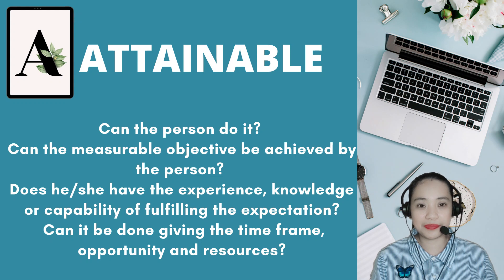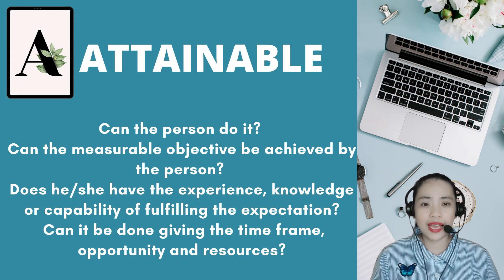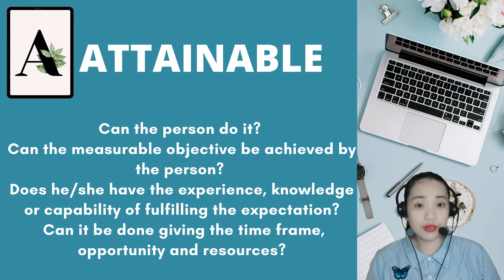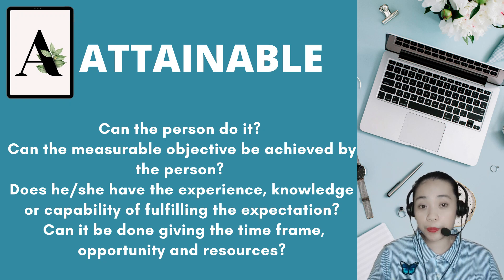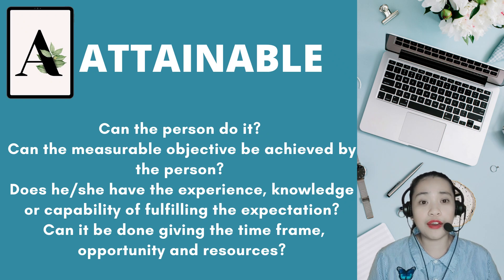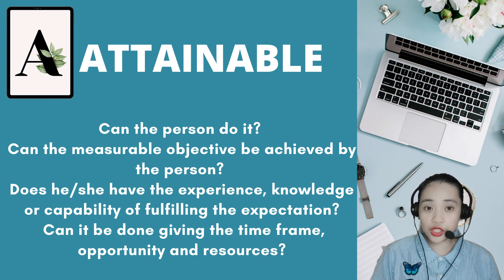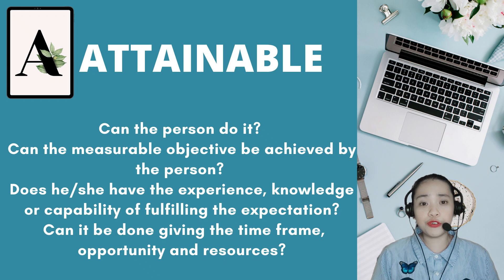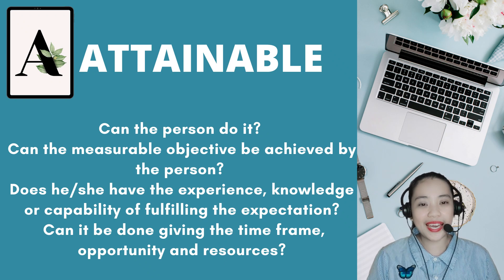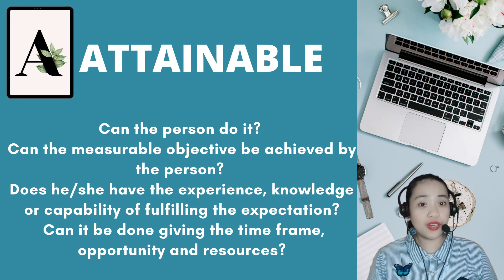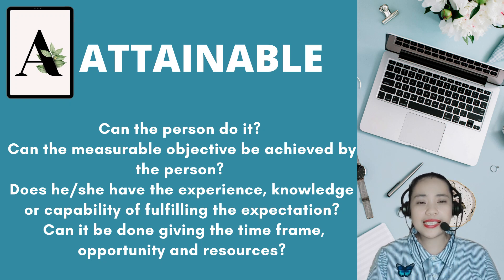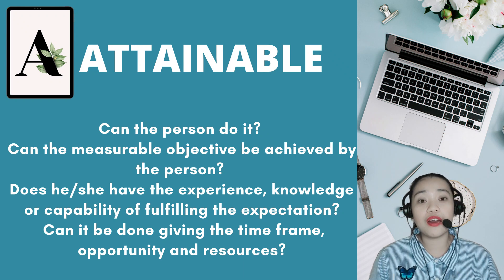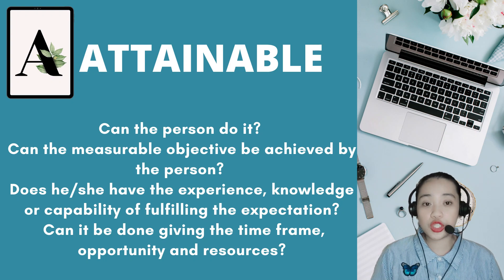Third is ATTAINABLE. It answers the questions: can the person do it? Can the measurable objective be achieved by the person? Does he or she have the experience, knowledge, or capability of fulfilling the expectation? Can it be done given the time frame, opportunity, and resources? These items should be included in the SMART objective because they will be a factor in the achievement.